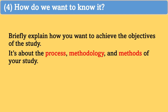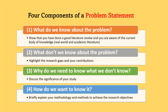Again, this needs to be very brief. We don't want to repeat the whole methodology section here. So in summary, a strong problem statement consists of four sections. Number one: what do we know about the problem? — meaning you need to show that you have done a very good literature review and are aware of the current body of knowledge. Number two: what we don't know about the problem? — highlight the research gaps and contributions of your study. Number three: why do we need to know what we don't know? — discuss the significance of your study. Number four: how do we want to know it? — very briefly explain your methodology and methods to achieve the research objectives.